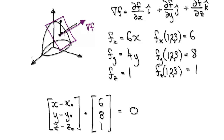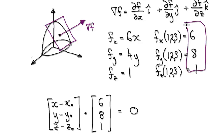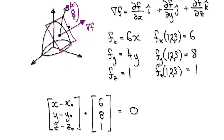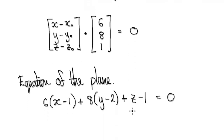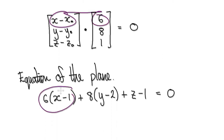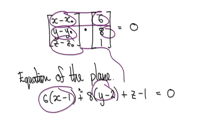To describe the plane, imagine any general point X, Y, Z. You need to demand that the vector from our known point to this general point is at 90 degrees to the gradient vector — meaning the dot product must equal 0. This vector is given by (x−1, y−2, z−3), and the gradient vector is (6, 8, 1). Multiplying out the dot product gives you the equation of the plane.